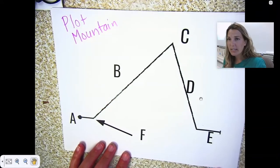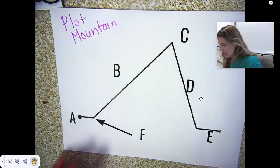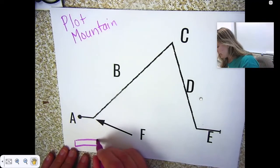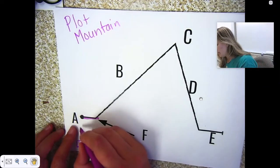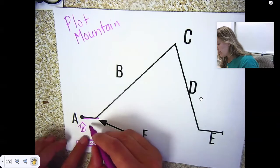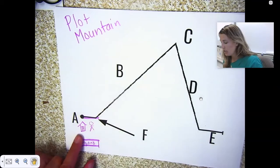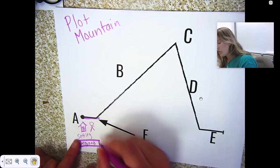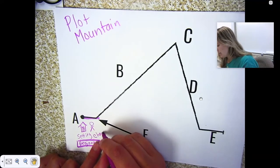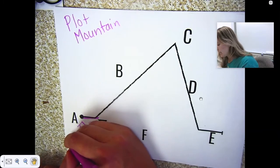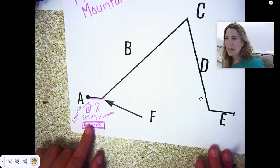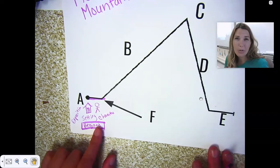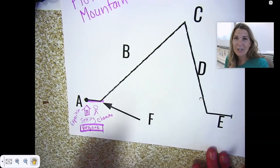Plot mountain has a beginning, a middle, and an end. In the beginning, this is where you learn where the story takes place and who the people are. So you learn the setting and you also learn the characters. This is called the exposition. The exposition covers setting and characters and it's at the very beginning of the book — it's where you start relating to the characters.